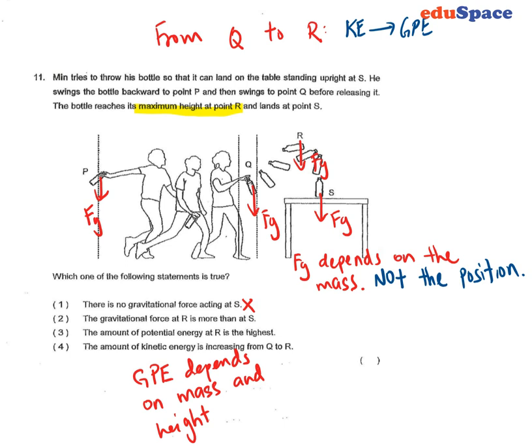Gravitational force depends on the mass, not the position. So regardless of which position it is, the amount of gravitational force acting on the bottle will be the same. It depends on the mass - as long as the mass is equal, there will be gravitational force acting on it. So in this case,